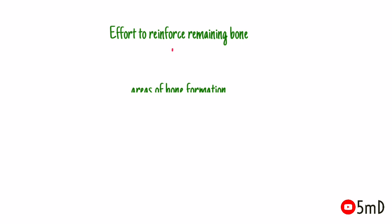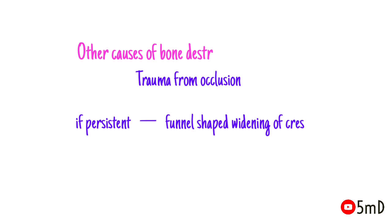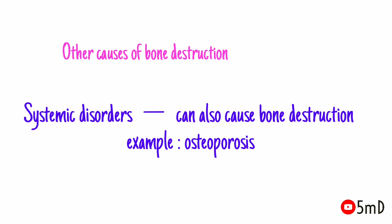We should also remember that in an effort to reinforce the remaining bone, areas of bone formation are also found at a distance from the inflammation. This is known as buttressing bone formation. Apart from inflammation, bone destruction can also be caused by trauma from occlusion, when persistent TFO results in funnel-shaped widening of the crestal portion of the periodontal ligament and resorption of adjacent bone, as well as by systemic disorders such as osteoporosis.